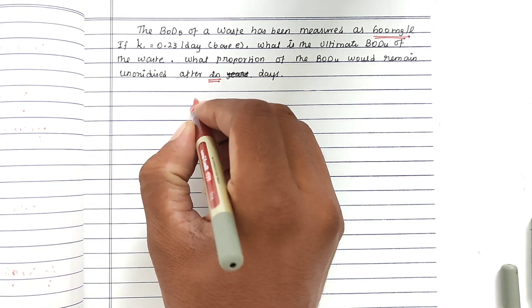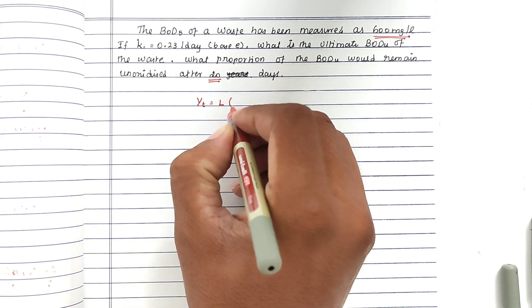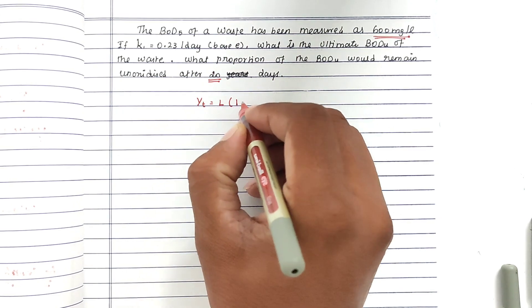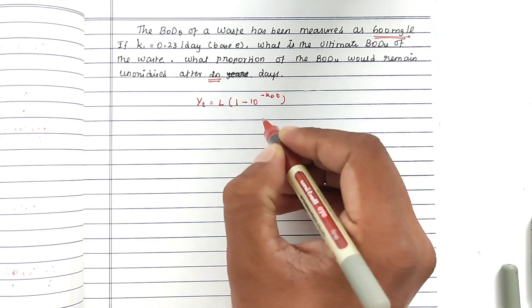We know the formula: Yt = L × (1 - 10^(-KD×T)), where L is the ultimate BOD.